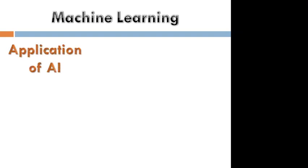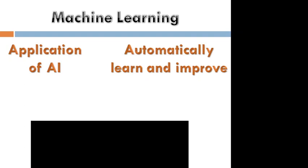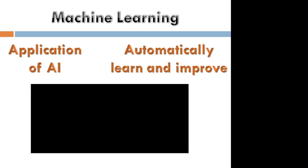What is machine learning? Machine learning is an application of AI — an application of artificial intelligence. The purpose of machine learning is to automatically learn and improve knowledge. I will show a small video example here.